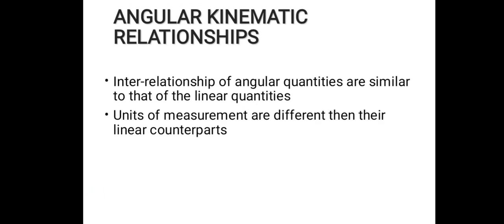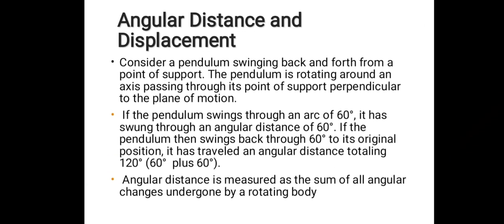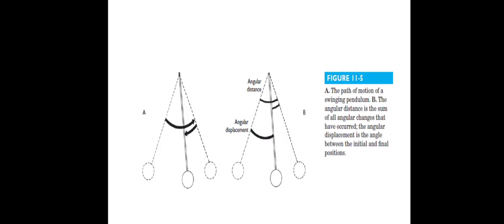The angular kinematic relationships — the interrelationship of angular quantities — are similar to those of linear quantities, though units of measurement differ. Consider a pendulum swinging back and forth from a point of support, rotating around an axis perpendicular to the plane of motion. If the pendulum swings through an arc of 60 degrees and then swings back 60 degrees to its original position, it has traveled an angular distance totaling 120 degrees. Angular distance is the sum of all angular changes undergone by a rotating body, while angular displacement is the angle between the initial and final position.